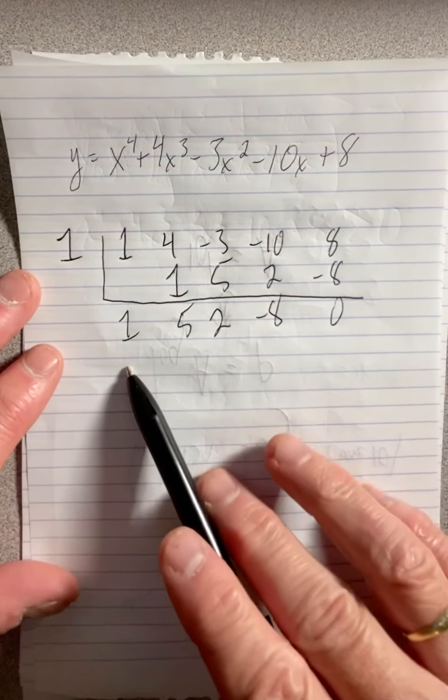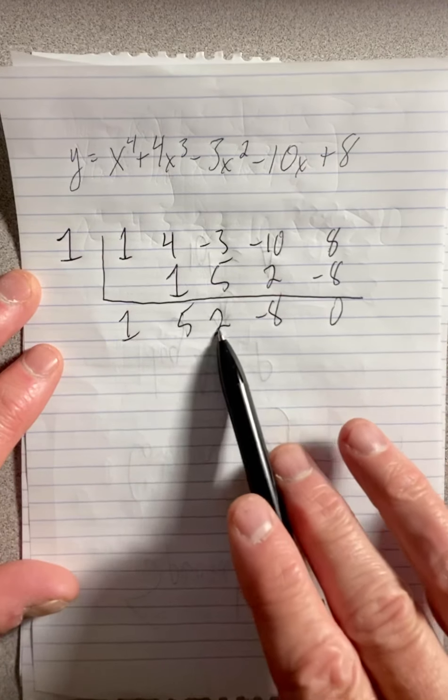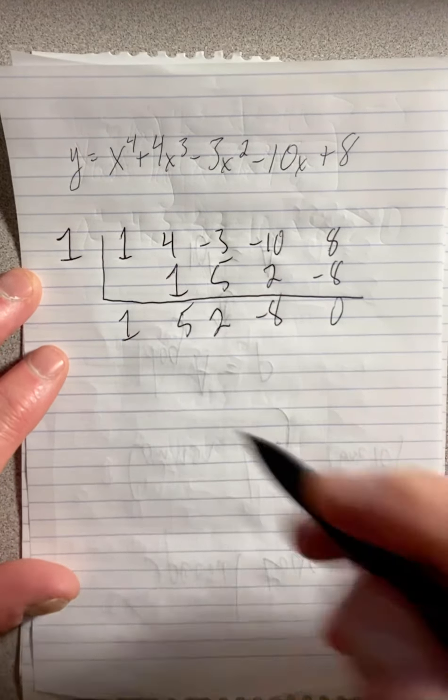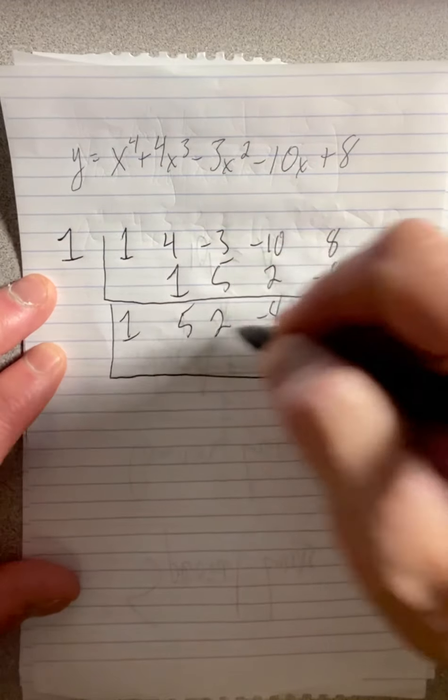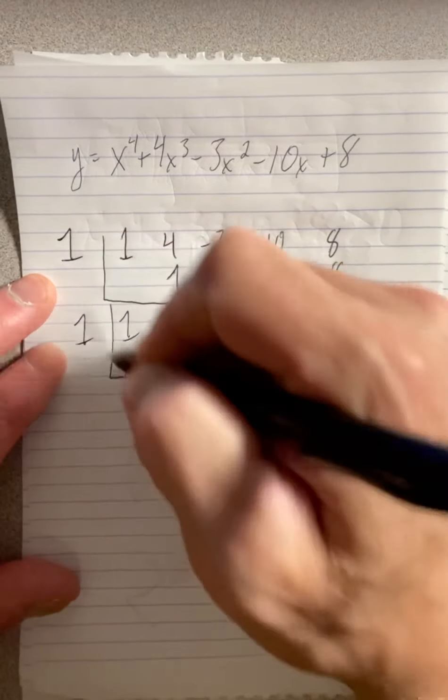Let's see if it's a double root. One and five is six. Six and two is eight. Eight and a negative eight is zero. So we know one is going to work again because they added to zero. So we'll do one again.